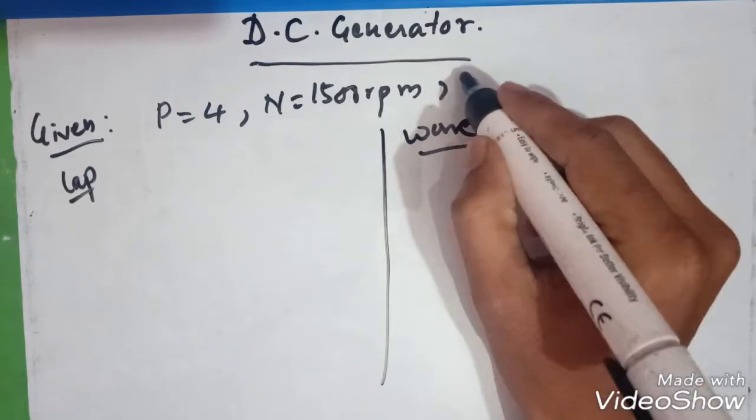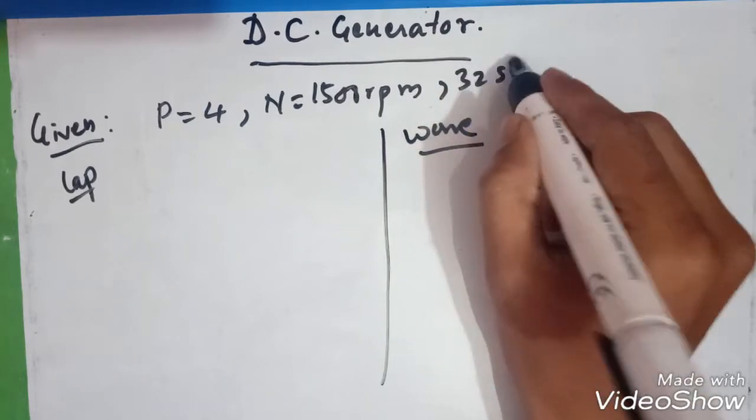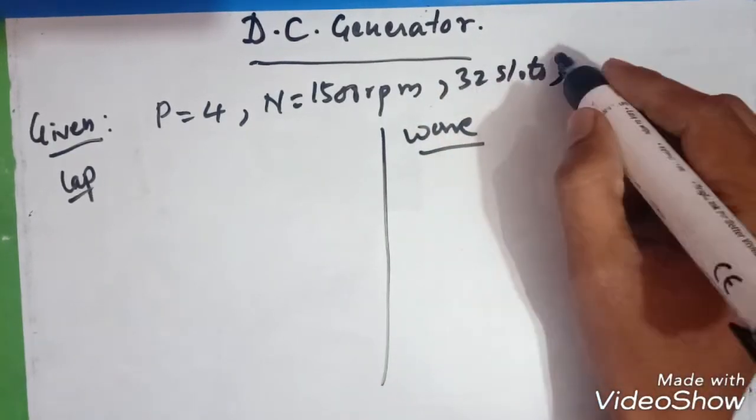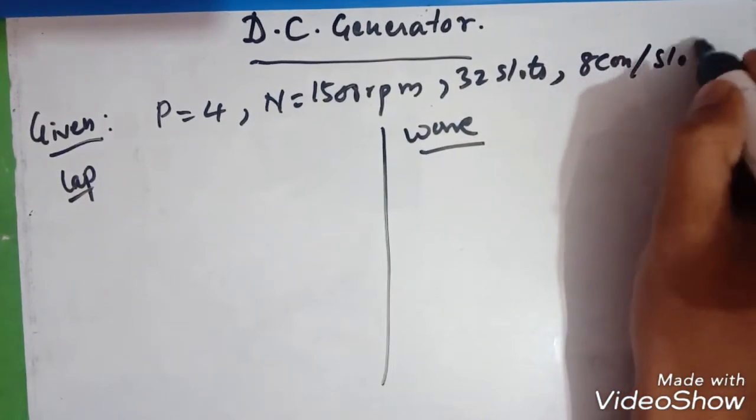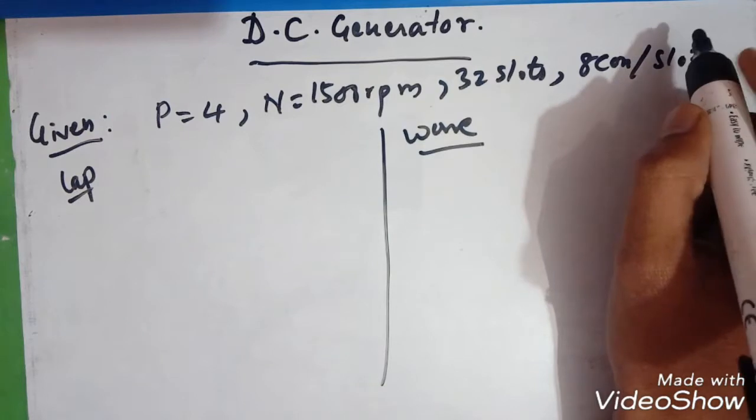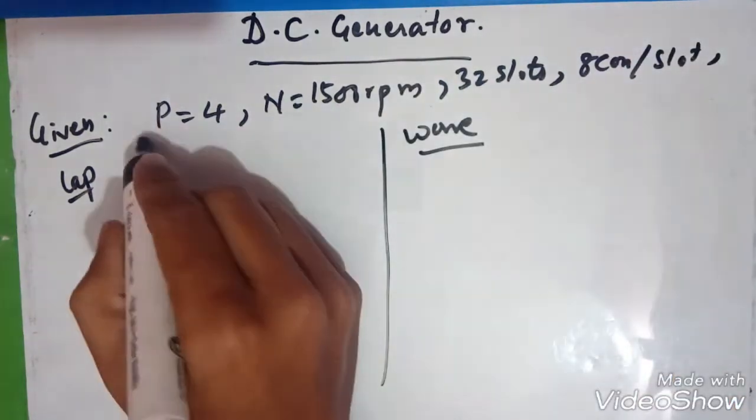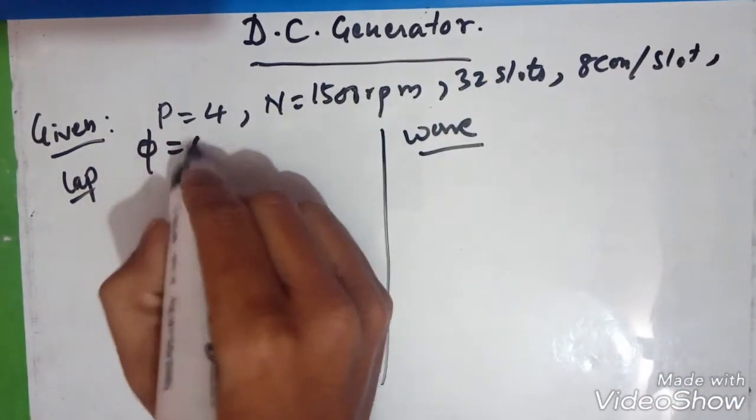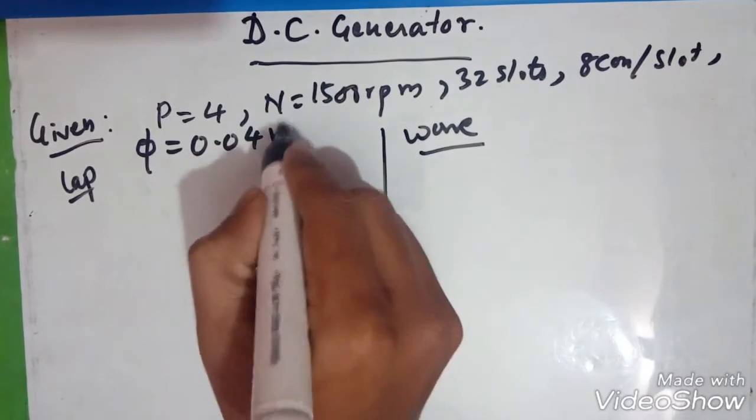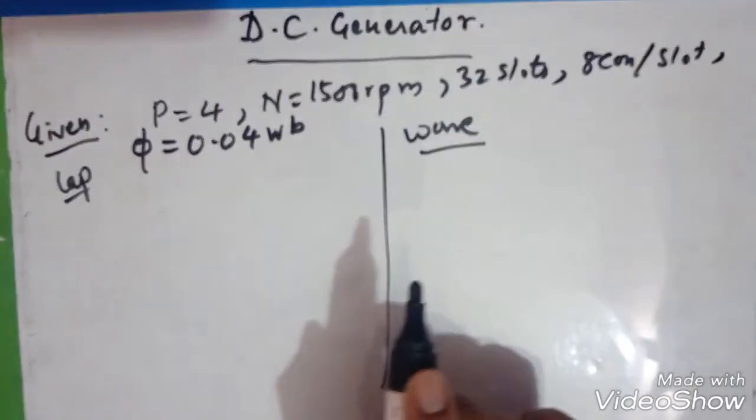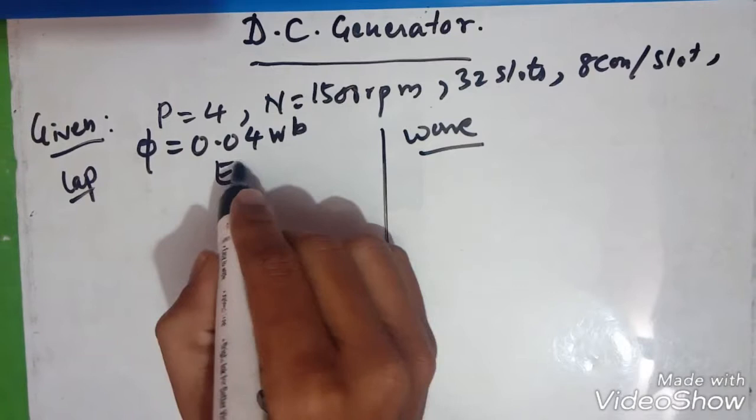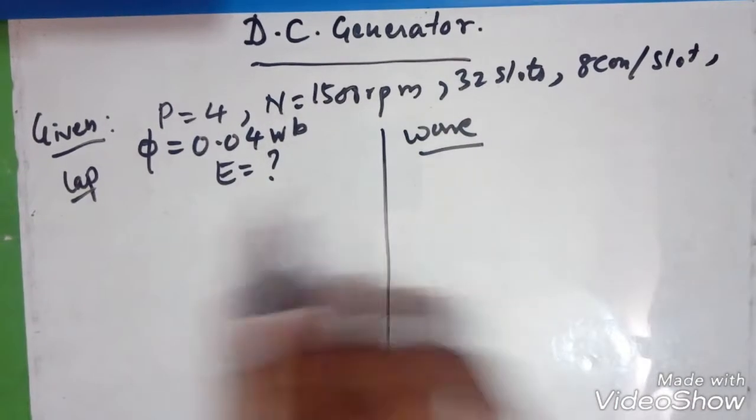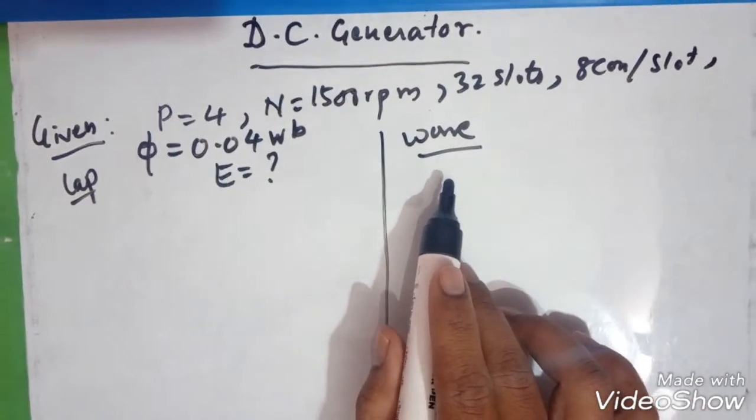So we have 32 slots, 8 conductors per slot. The flux per pole is 0.04 webers. Like this you have to write whenever you are writing any problem. First you write down the given things. You need to calculate the value of EMF in each case: lap winding and wave winding.